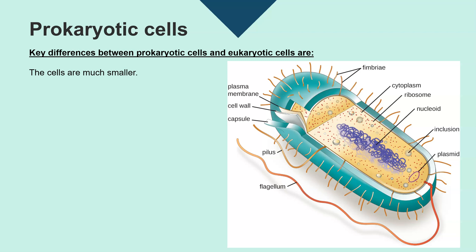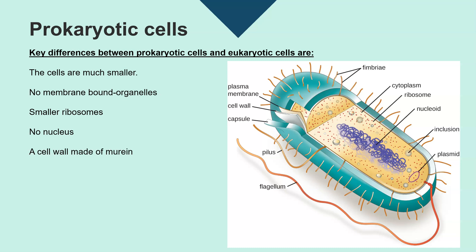Prokaryotic cells are much smaller, they have no membrane-bound organelles, and they do have ribosomes but they're much smaller in size. They don't have a nucleus.